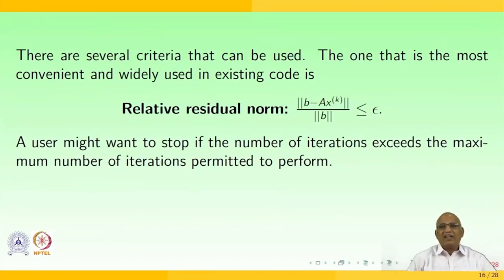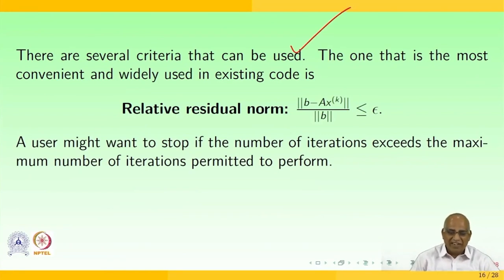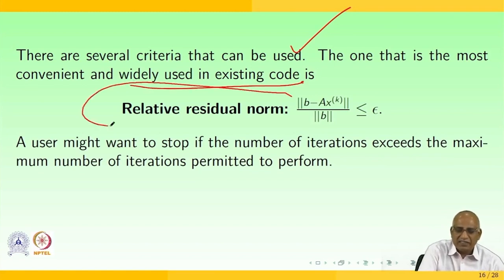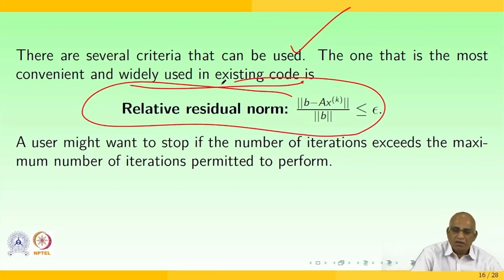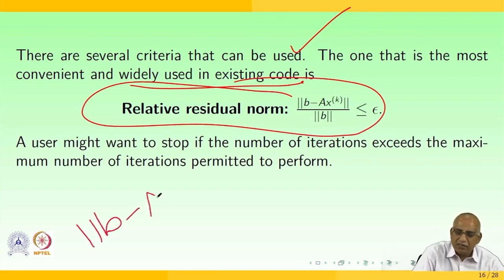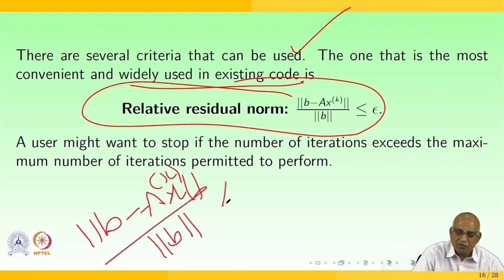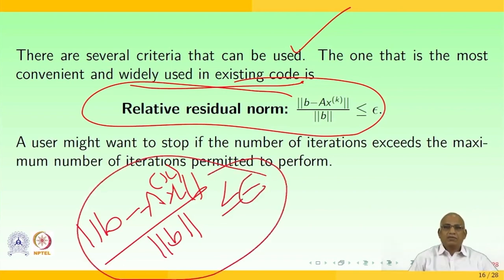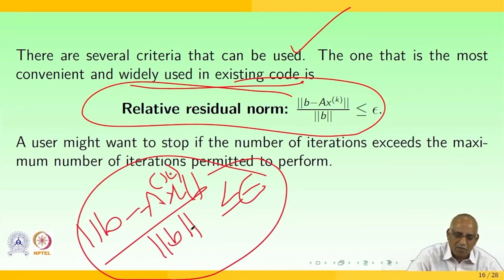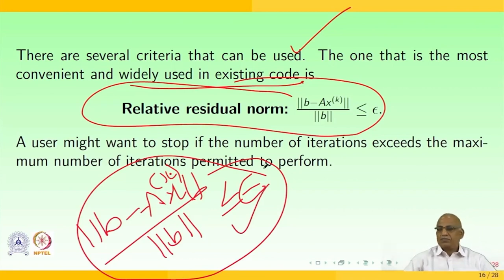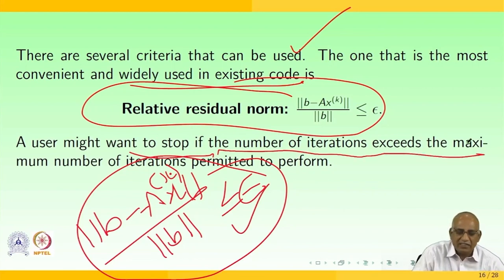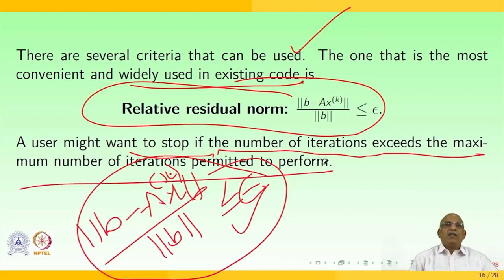There are several criteria that can be used. The most convenient and widely used is the relative residual norm: ||b - Ax^(k)|| / ||b|| < epsilon. A user might also want to stop if the number of iterations exceeds the maximum permitted.